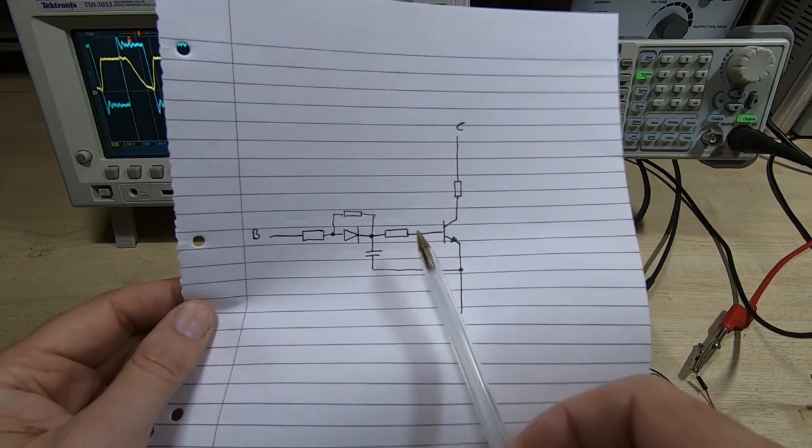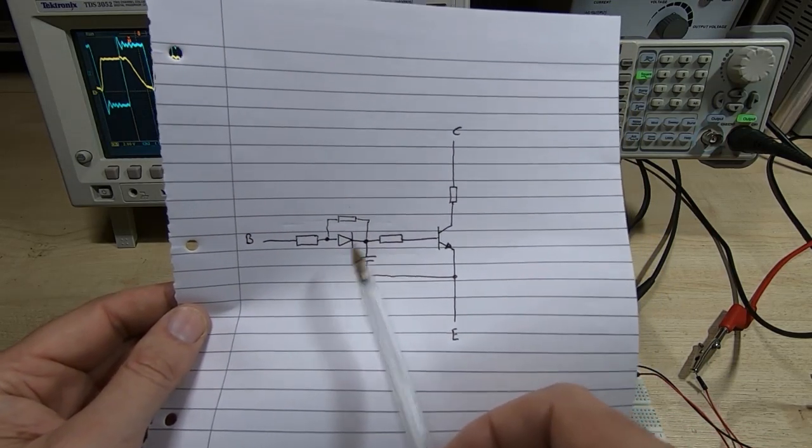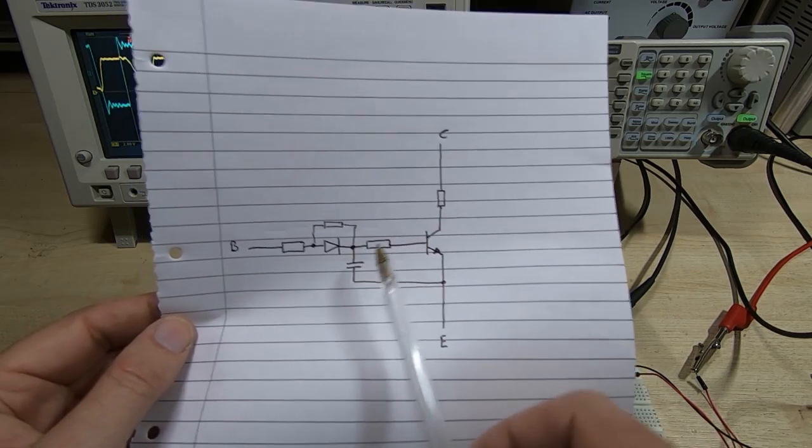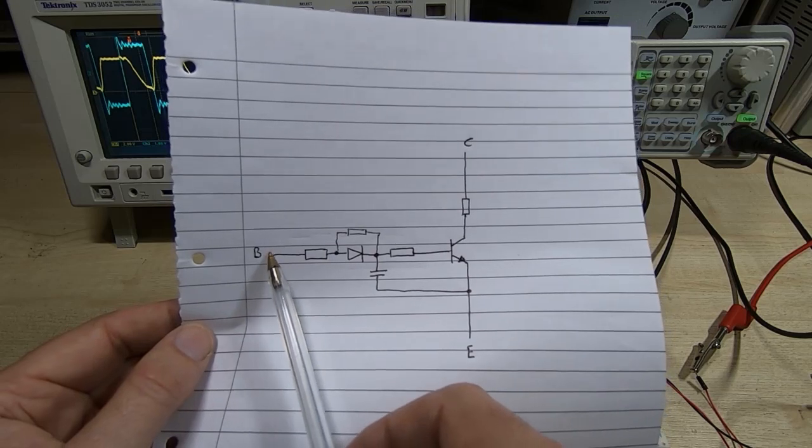So effectively we have this capacitor, and this is the capacitor that's formed because of the way that the transistor is made.